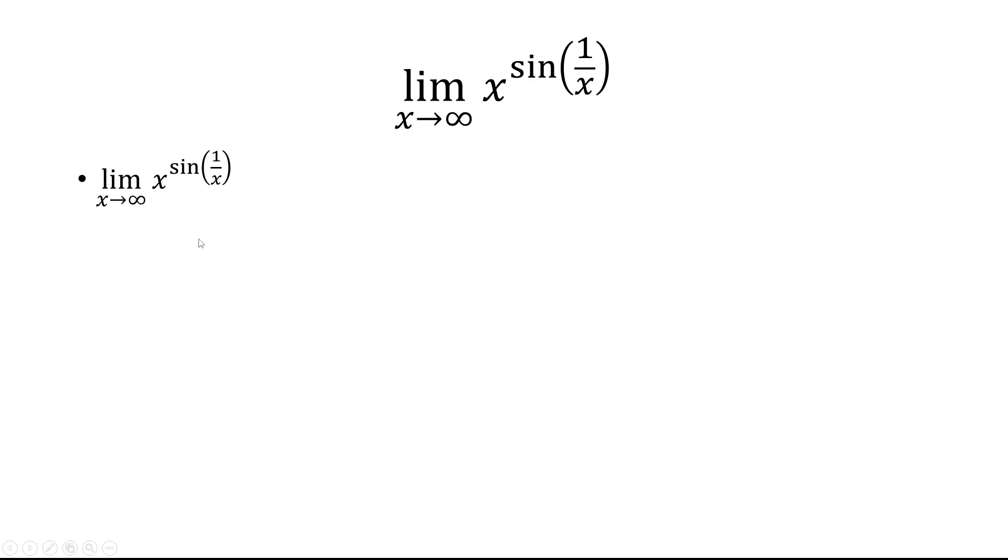Let's first rewrite x to the sine power as e to the natural log of that. And this limit now can go in the exponent, so that's going to be e to the limit as x approaches infinity of natural log x raised to the sine of 1 over x. We're going to use the log property where we bring the exponent down, so the sine of 1 over x comes down, and then we have natural log x.